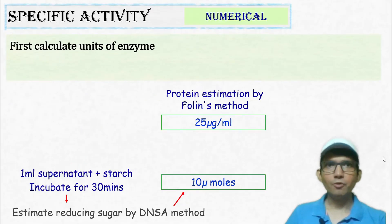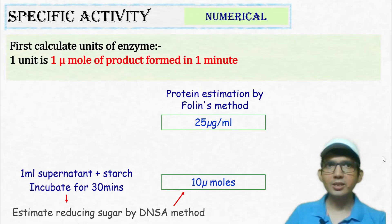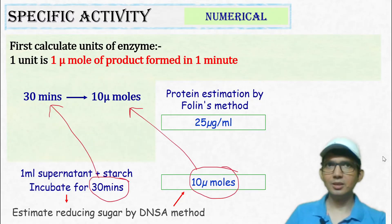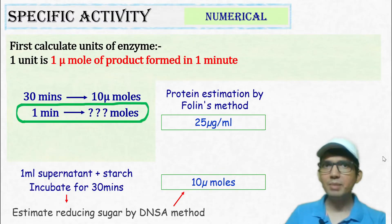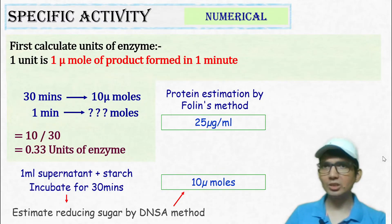First, let's calculate the units of enzyme. 1 unit is 1 micromole of product formed in 1 minute. So, in 30 minutes, we are getting 10 micromoles of product. So, 1 minute will have how much? This will be equal to 10 divided by 30 which is 0.33 units of enzyme.